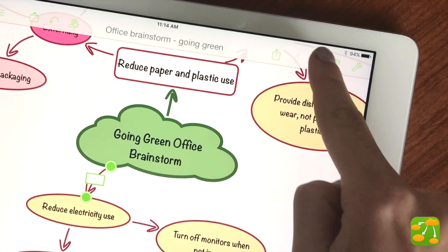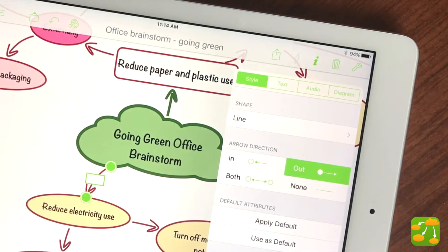You can use the inspector, located under the I button on your top toolbar, to further customize or change the direction of your link arrows.